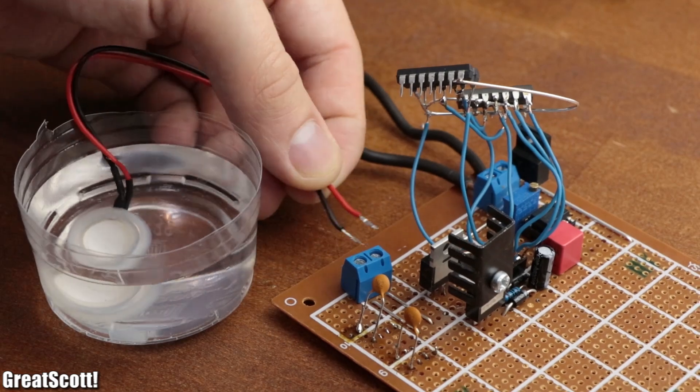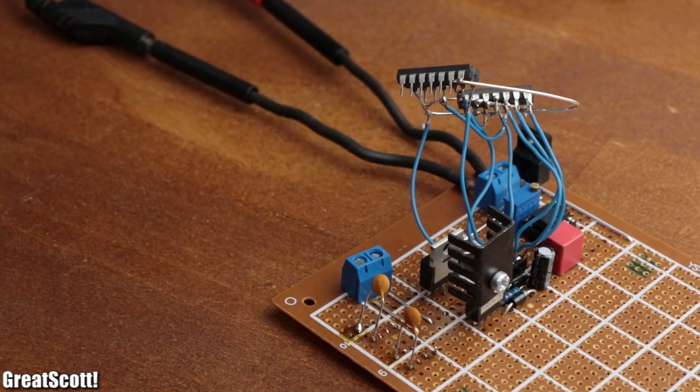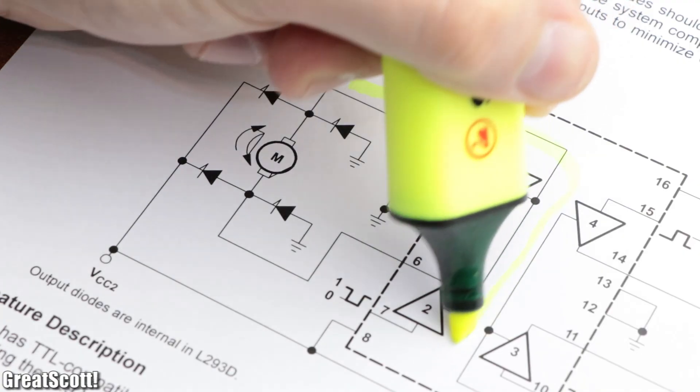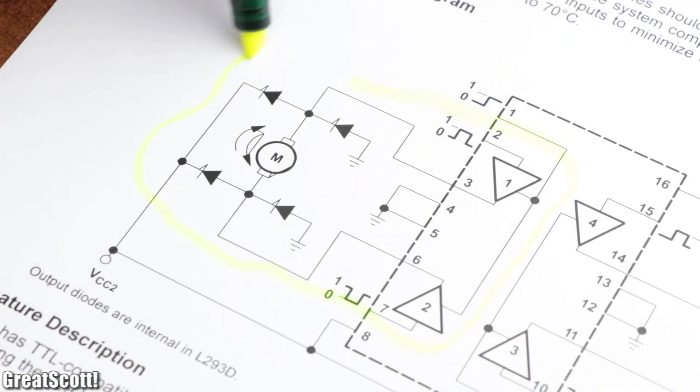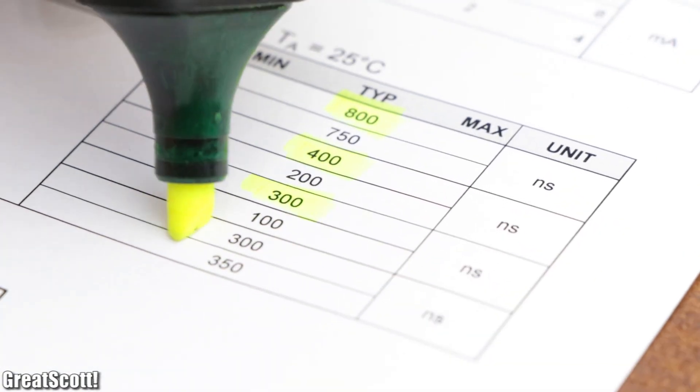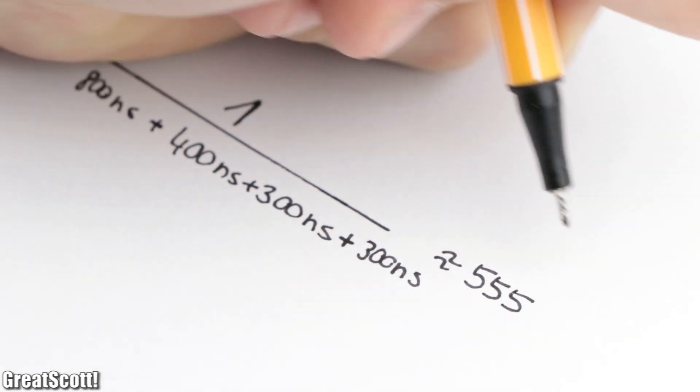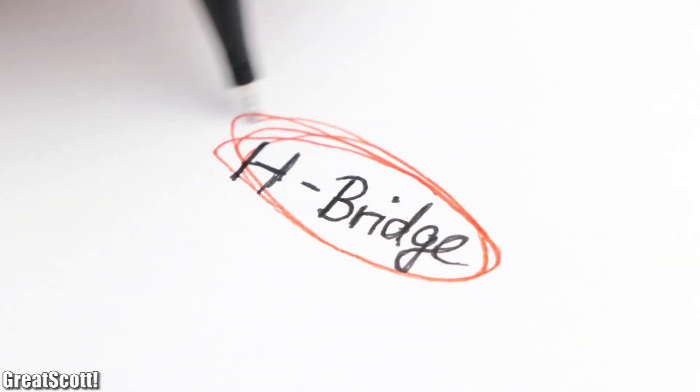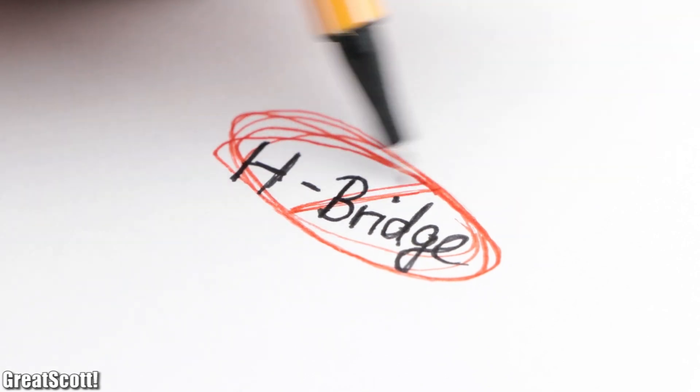So as a last resort for the H-bridge circuitry, I simply got myself an L293 IC, which is basically a pre-made H-bridge. But after doing some calculations, I quickly realized that this H-bridge would also have been too slow. Which led me to abandon the idea of using an H-bridge completely.